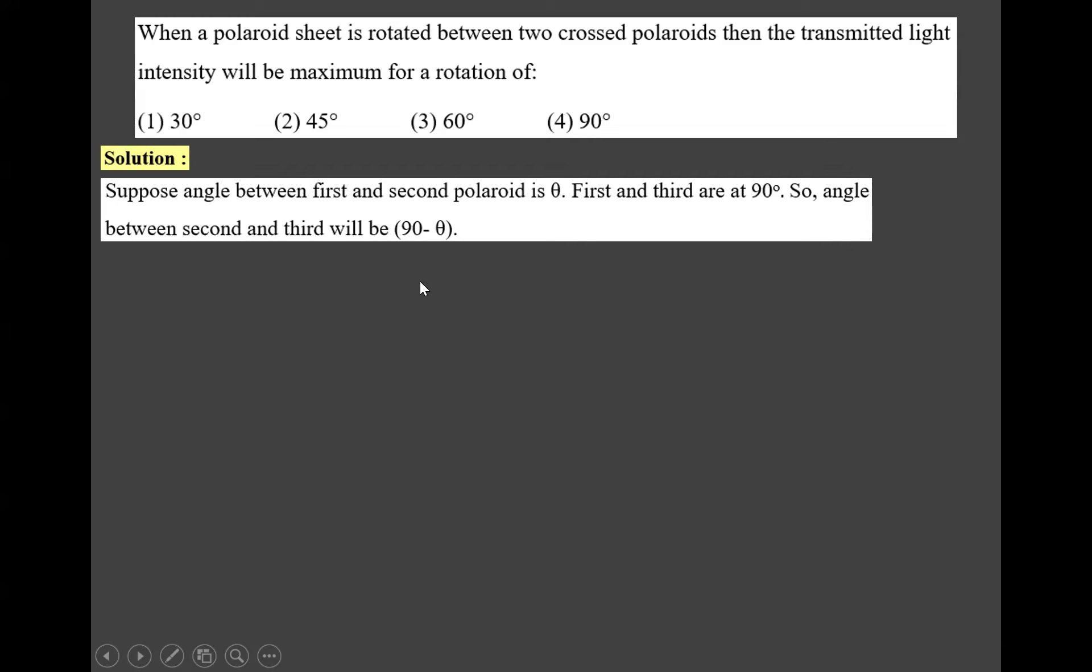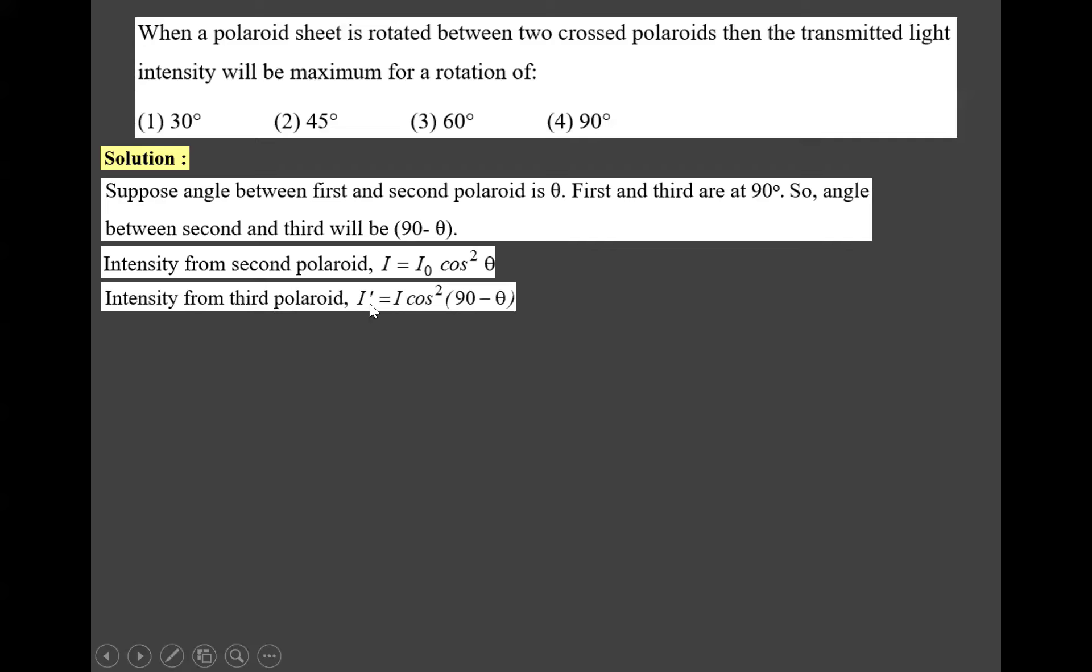Then the angle between second and third will be 90 minus theta. The intensity transmitted from the second polaroid is I equals I₀ cos² theta. This intensity I is incident on the third polaroid. So intensity transmitted from the third one is I' equals I cos²(90 - theta).